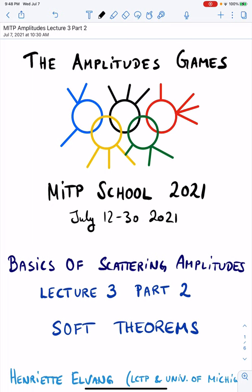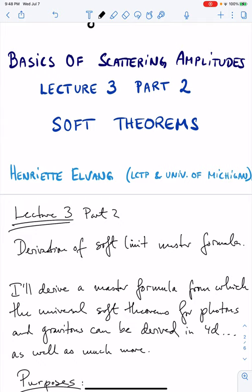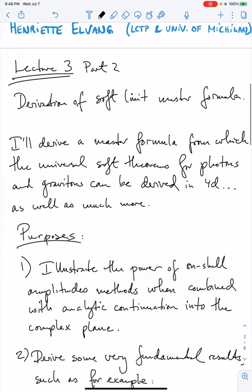In this second part of Lecture 3, we're going to continue our study of divergent soft theorems. In particular, I'll derive a master formula that makes it possible to derive the soft theorems for photons and gravitons from a single formula in the 4D spinor-helicity formalism, as well as giving us many more interesting results.